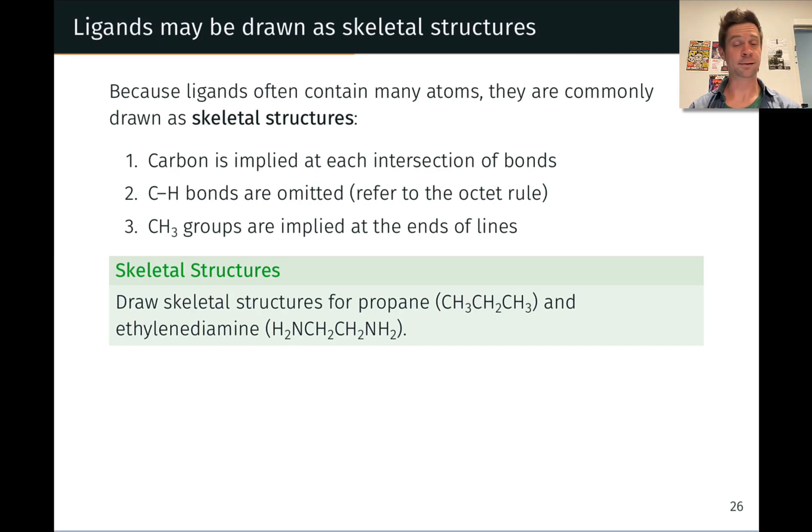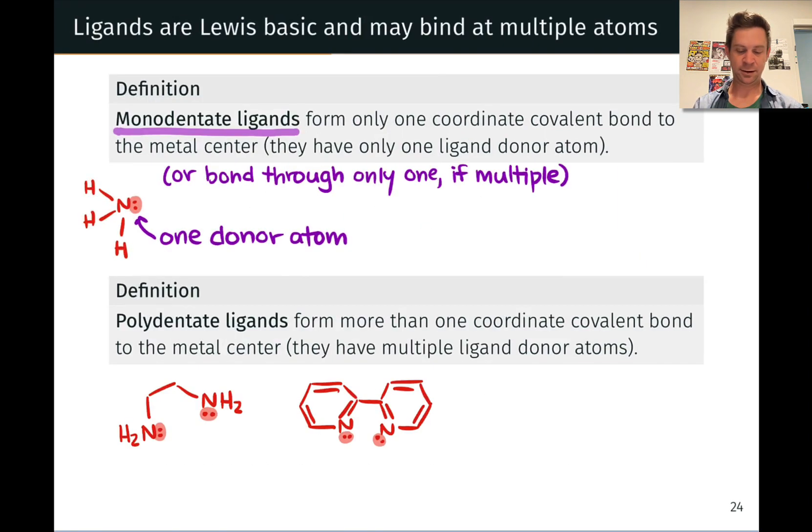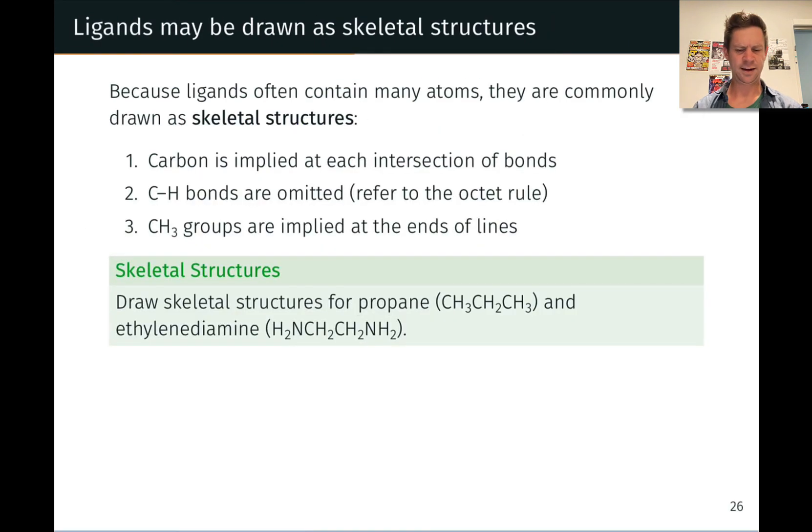So, three ideas for skeletal structures. First, carbon is implied at each intersection of bonds. So, where we see two bonds come together, a carbon is located at that intersection. For example, if we back up to ethylenediamine, there's a carbon implied right here, and there's a carbon implied right here, because two single bonds are coming together. We've got a bond angle, that implies that there is a carbon right there.